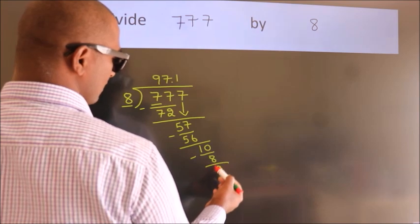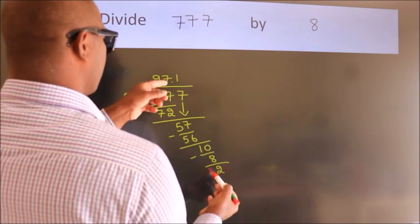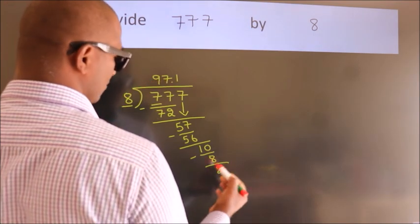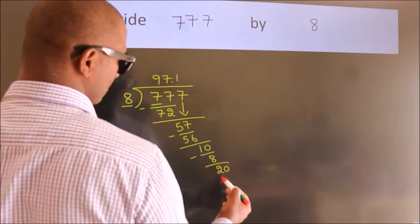After this, we already have the decimal. So directly take 0. So 20.